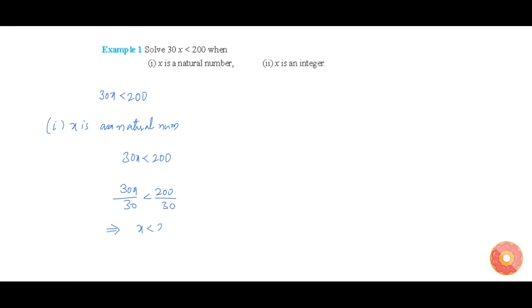x less than 20 by 3. But we have also considered the condition that x is a natural number, so we have to consider the natural numbers which are less than 20 by 3. They are 1, 2, 3, 4, and 5.